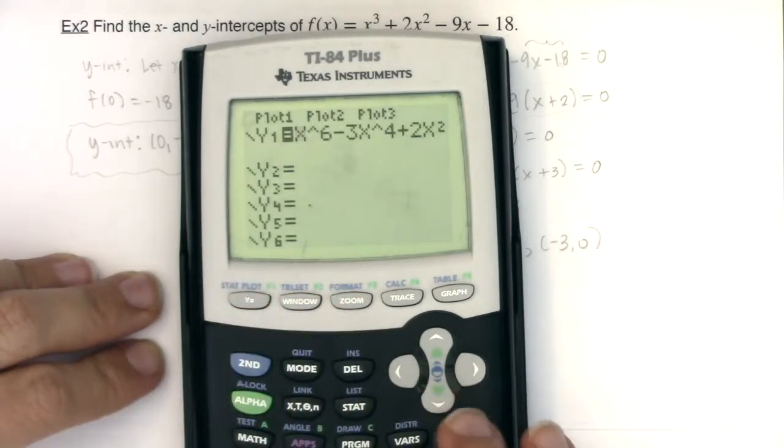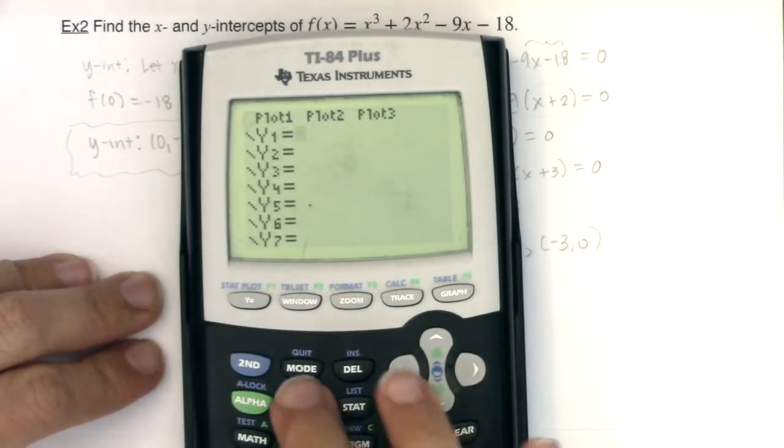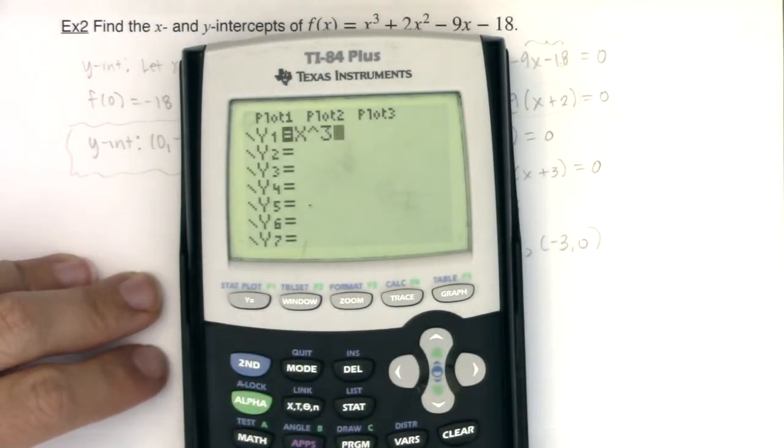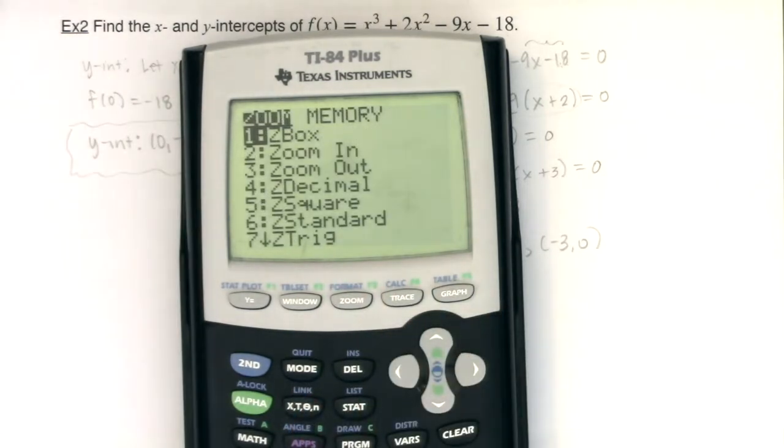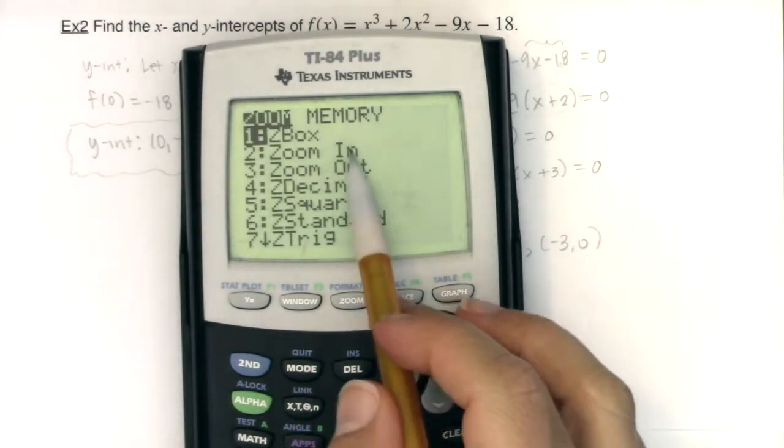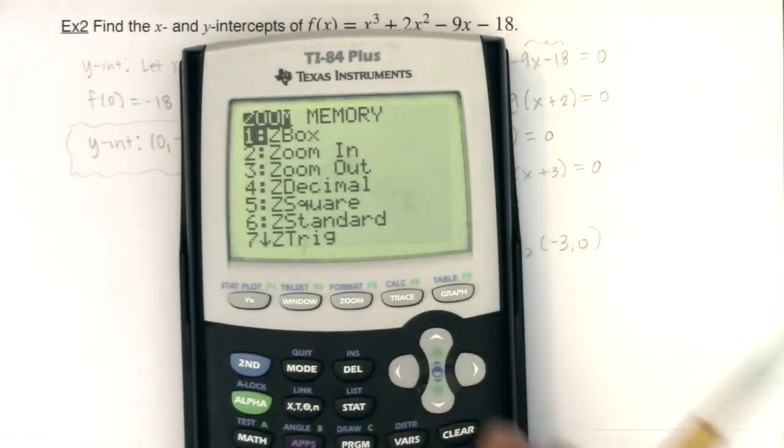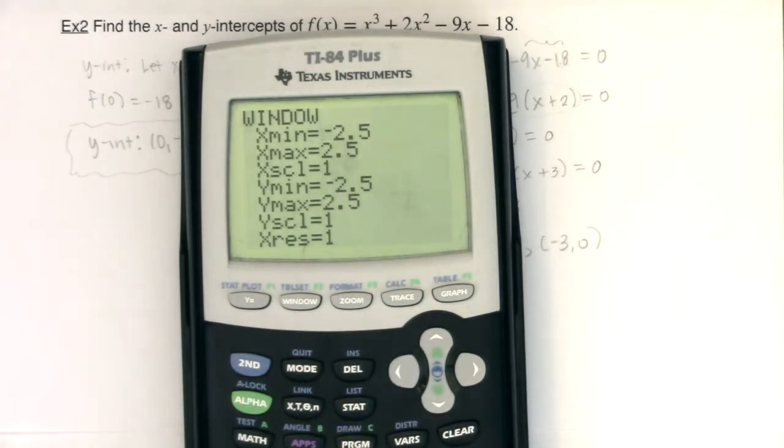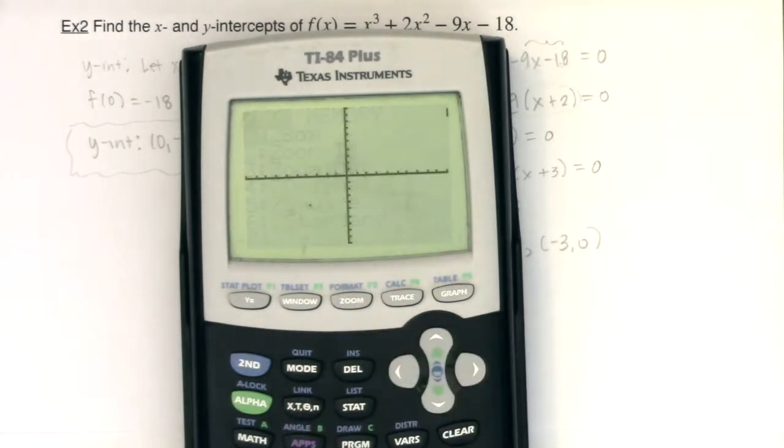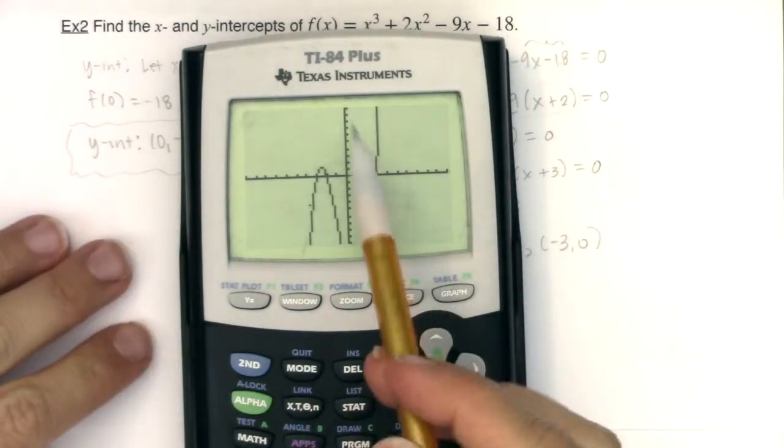So let me go ahead and clear this out and put in my polynomial: x³ + 2x² - 9x - 18. I'm going to hit zoom 6, especially because I remember in example 1, I zoomed in, so my window's a little messed up. Before I hit zoom 6, I just want you to see my window. I had zoomed in at the origin in example 1, so let me reset zoom 6. And I should see three x intercepts.